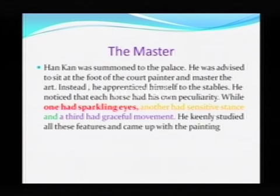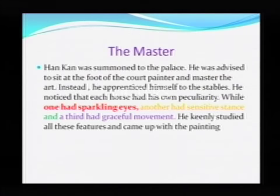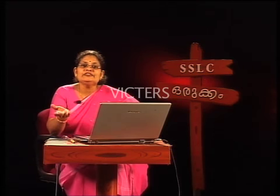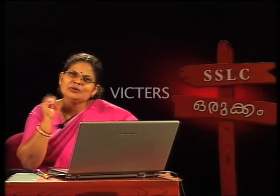Why did he go there? He went there because he wanted to study the character of different horses, because he was planning to paint a horse. He observed carefully. What did he notice? One horse had sparkling eyes, another had a very sensitive stance, and a third had graceful movement. What had sparkling eyes did not have graceful movement; what had sensitive stance did not have sparkling eyes. Different horses had different great qualities. Being an artist, the greatest quality is keen observation — he observed carefully from different angles where these specialties occur and how he could express them.